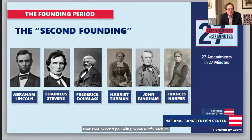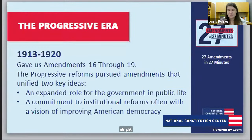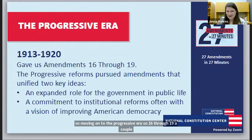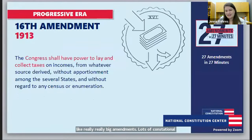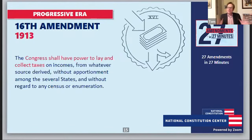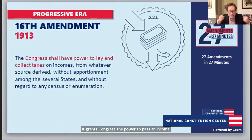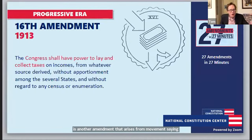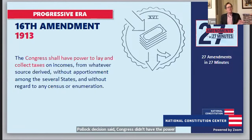Moving on to the Progressive Era — amendments 16 through 19, a couple of really big amendments and lots of constitutional change. Fast-forwarding 40 years: the 16th Amendment, ratified in 1913, grants Congress the power to pass an income tax. This is another amendment arising from movements saying the Supreme Court is wrong — the Supreme Court in Pollock v. Farmers' Loan said Congress didn't have the power to pass an income tax. Populists and progressives disagreed, and finally in 1913 those reformers won, granting Congress the power to levy an income tax.